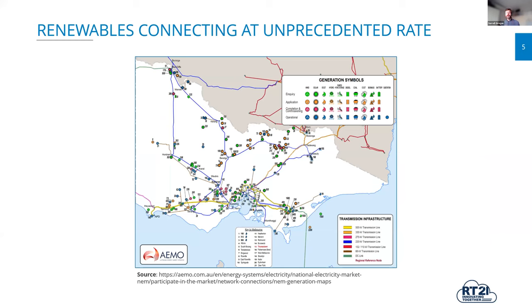To illustrate the scale of change in the system, this slide shows new technology attempting to connect into the Victorian system. Each icon has a number showing the megawatts wanting to connect, and anything not blue is a new provider. There's a huge amount of solar interest, especially in the northern part of the state, some wind interest, and increasingly battery technology being deployed around load centres. The generation fleet, previously clustered in one central area, is now spread throughout the state in truly staggering amounts, keeping the Australian industry very busy.